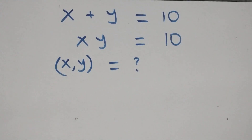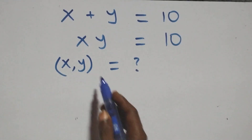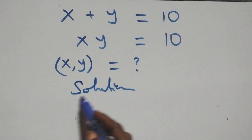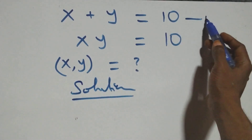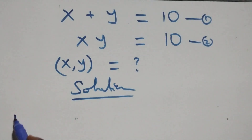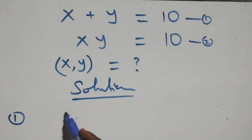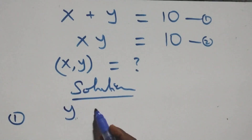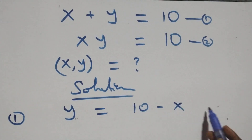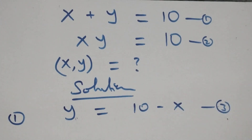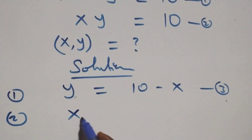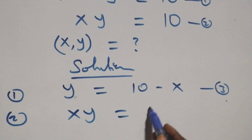Welcome. We will solve this algebra equation. We label the first equation as equation one and the second as equation two. From equation one, we make y the subject, which gives us y equals to ten minus x. We call this equation three. From equation two, we have x times y equals to ten.